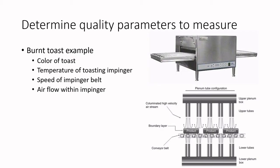Maybe it's the speed of the belt. If the belt is going really fast perhaps the toast is not dwelling in the impinger long enough; or perhaps the belt is going too slow and the toast is dwelling too long. The temperature could be completely adequate but if the toast is in there too long it's burning. Another thing to evaluate is airflow — in an impinger the airflow characteristics are really critical. If one of the tubes in the plenum were blocked — say a lower tube — you might find the color on top is fine but the color on the bottom is off.